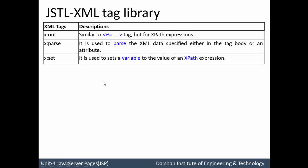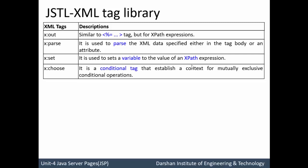Next tag is x:set. This tag is used to set a variable to the value of an XPath expression, which is very similar to c:set. In c:set we were setting a variable with some specified value. Here also we can set a variable in an XML tag with the help of x:set. Then x:choose, which is again very similar to c:choose. x:otherwise and x:when are sub-tags of x:choose. This is a conditional tag that establishes a context of mutually exclusive conditions, similar to a switch operation.